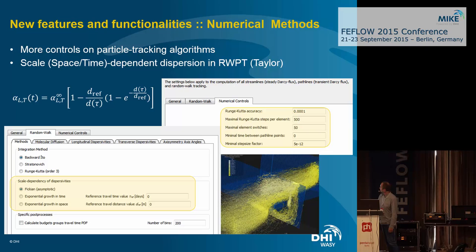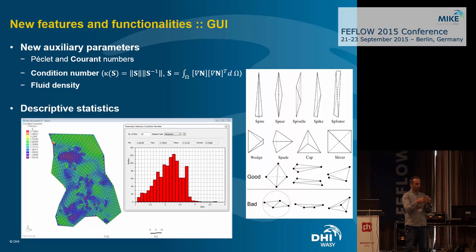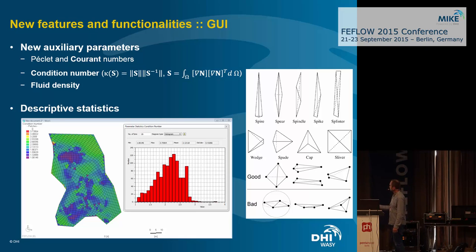There are also more controls on particle trackers, some scale dependency of random walk, and a few new auxiliary parameters like fluid density and the condition number — which is already a step toward a new type of measure of mesh quality, giving you the degree of deformation of a given element and a direct message on whether the mesh is sufficiently well designed for calculation.